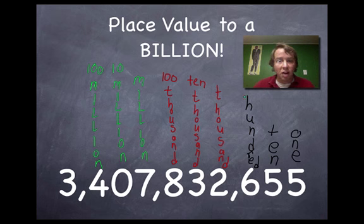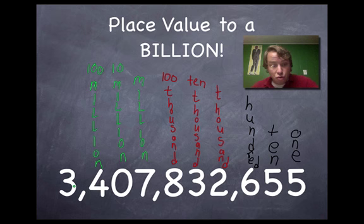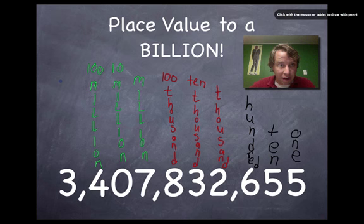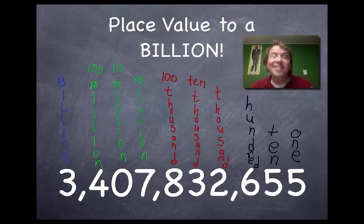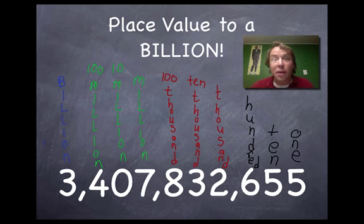Ones, tens, hundreds, thousands, ten-thousands, hundred-thousands, millions, ten-millions, hundred-millions — and then our new number is billions. And if there were a digit after that, it would be ten-billions, and then hundred-billions. You'll learn the bigger numbers later.